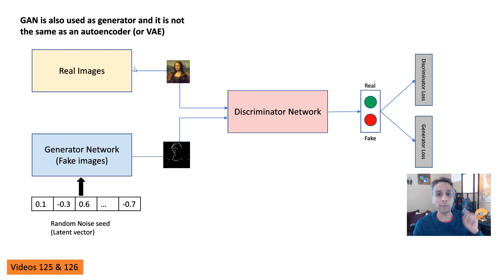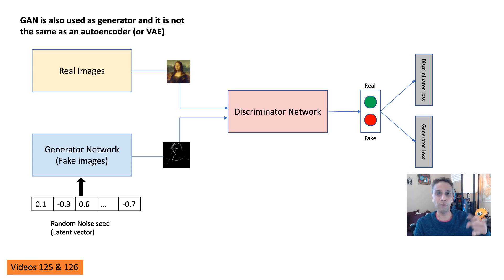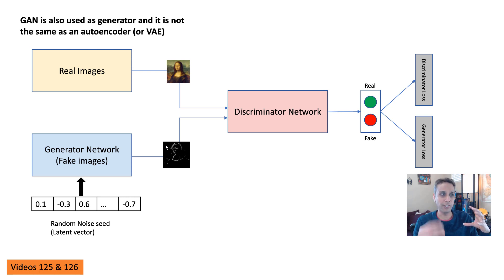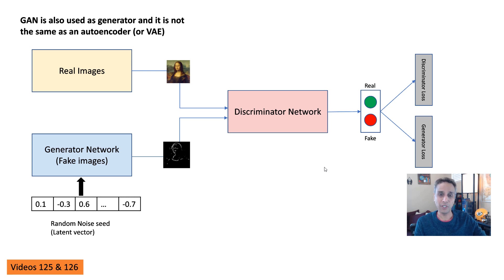But autoencoders and variational autoencoders are not the same as generative adversarial networks. In a GAN, you have a generator trying to fool a discriminator, and you update these two networks independently — one competing against the other. When the generator is good at fooling and the discriminator can no longer catch it, you've converged. That's a completely different discussion.